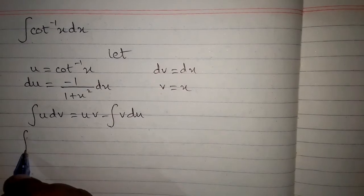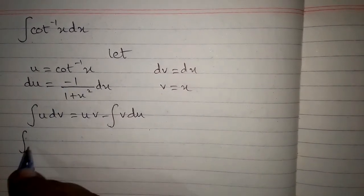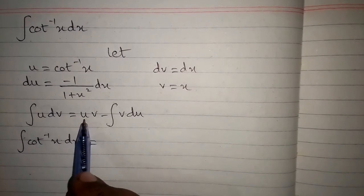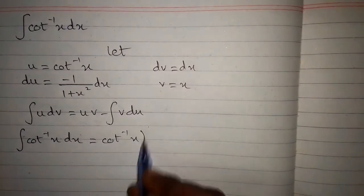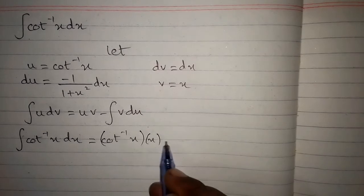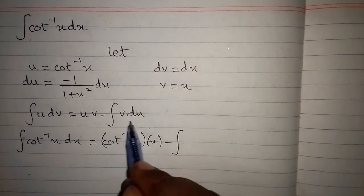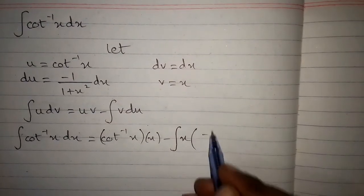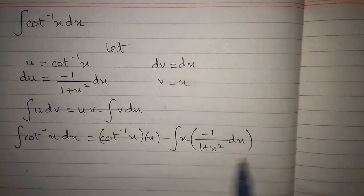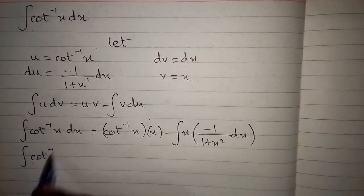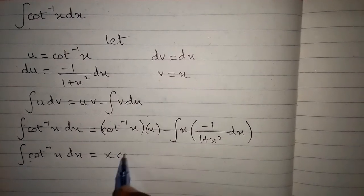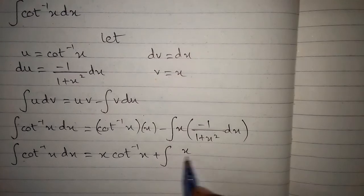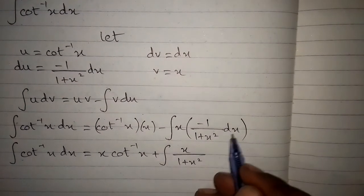Now we put the values into the formula. The integral of cot inverse x dx equals cot inverse x times x, minus the integral of v times du, which is x times minus 1 upon 1 plus x squared dx. Multiplying by minus 1 gives plus, so we have x times cot inverse x plus the integral of x upon 1 plus x squared dx.